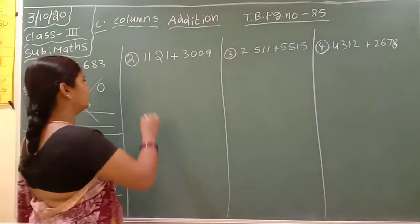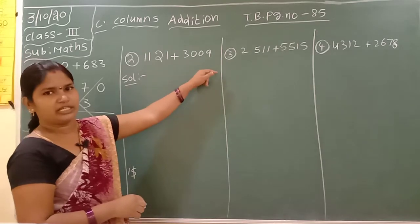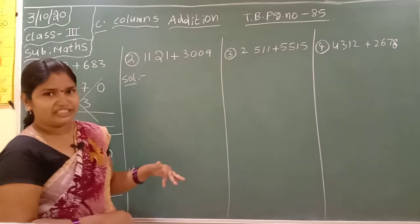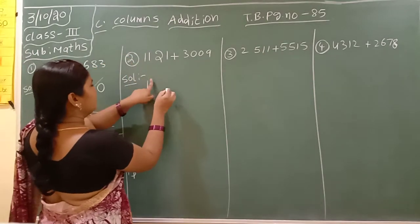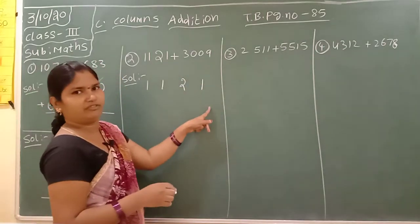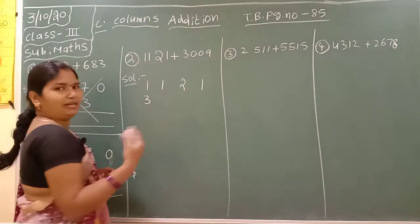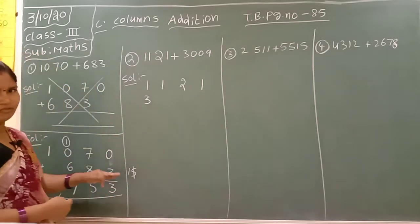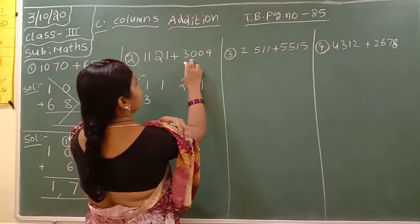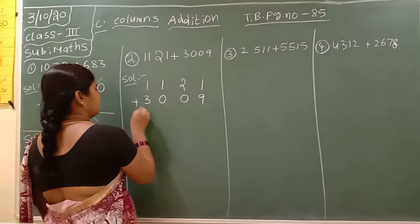Next, go for the second question: 1121 plus 3009. In this, the first is a 4-digit number and this one also a 4-digit number. Now the arrangement of numbers: first write down one, finger gap, one, finger gap, two, finger gap, one — that is 1121. Next one: three. Number of digits are same, means sorting from thousands place. Next: 3009. Keep the addition symbol here.